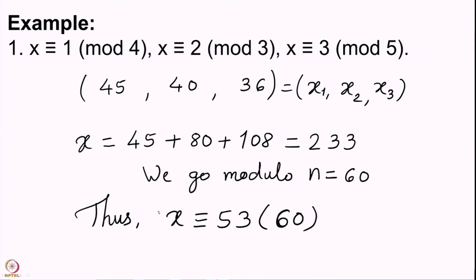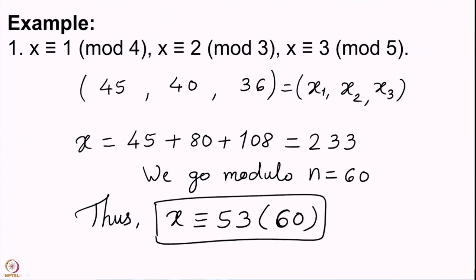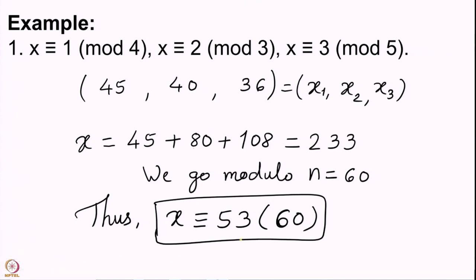Let us verify: 53 mod 4 — subtract 52, remainder is 1. 53 mod 3 — subtract 51, remainder is 2. 53 mod 5 — subtract 50, remainder is 3. So the answer is indeed 53 mod 60.